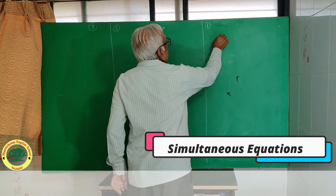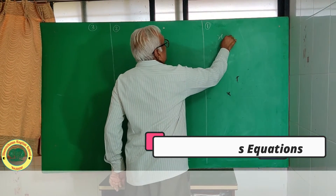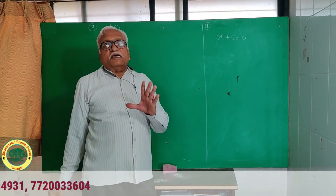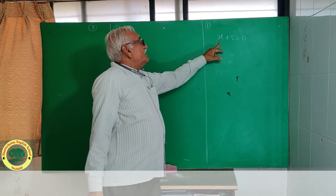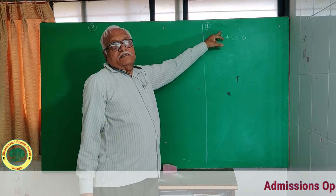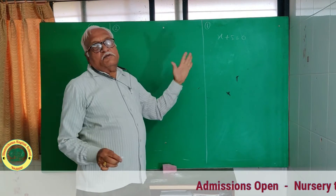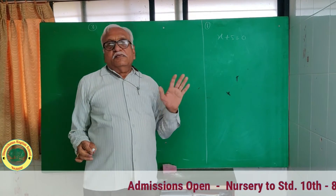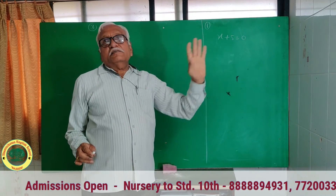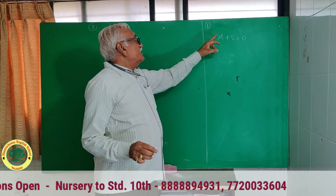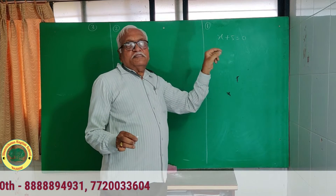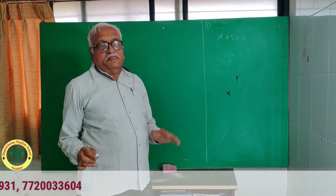Consider the equation x plus 5 equal to 0. This equation has 1 variable and 1 degree, therefore it is called a linear equation in 1 variable. Because the degree is 1, it is linear, and the variable is 1, therefore it is a linear equation in 1 variable.